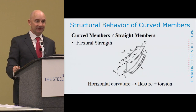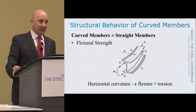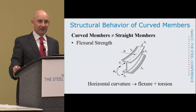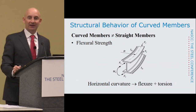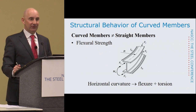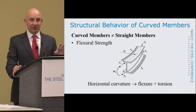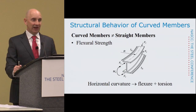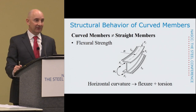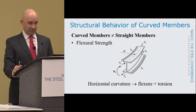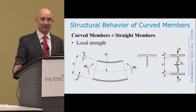Now let's look at horizontal curvature. If you have something curved in the horizontal plane and apply a flexural load, a straight beam with equal end moment gives pure flexure. But once you put curvature in there and apply equal and opposite end moments, you get flexure plus torsion. This is why curved beams behave dramatically differently from straight beams — and we'll see how to handle that a little later.